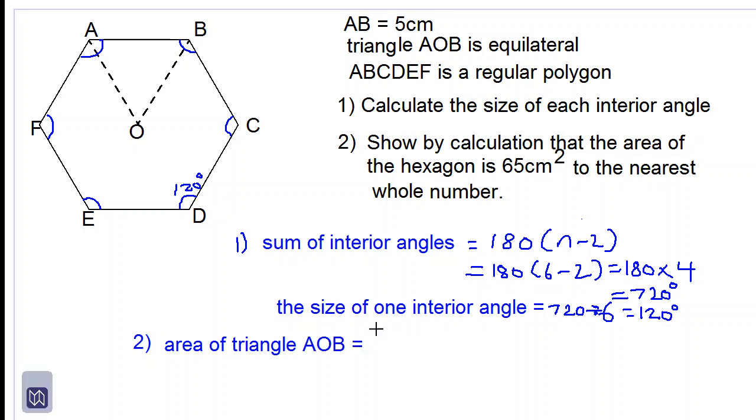To do that we use the formula: one half times a times b times sine C. We know that the length from A to B is 5 cm. We also know that this is an equilateral triangle, meaning all the sides are equal length, so BO must also be 5 cm and AO must also be 5 cm. We also know that in an equilateral triangle all the interior angles are equal, so when we divide 180 by 3 we get 60 degrees for each interior angle.